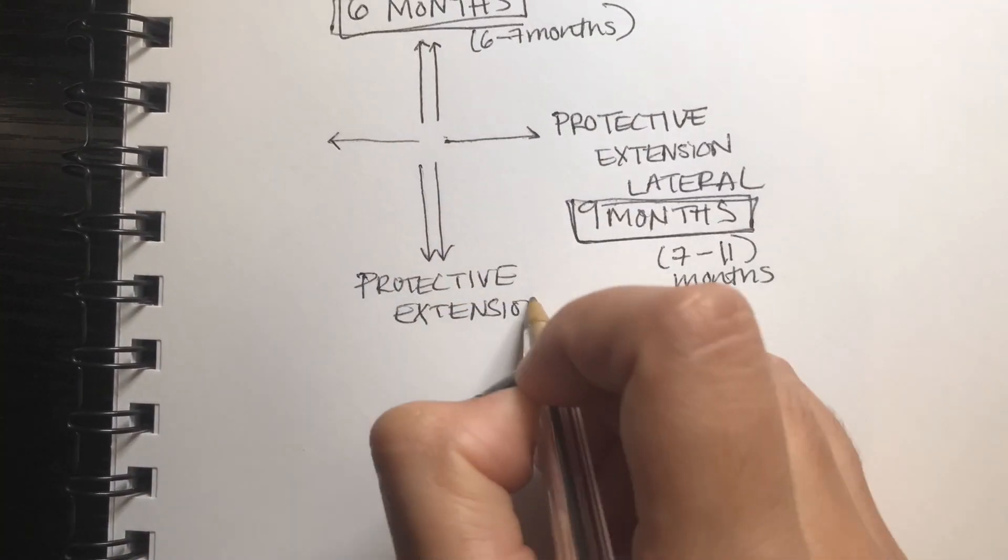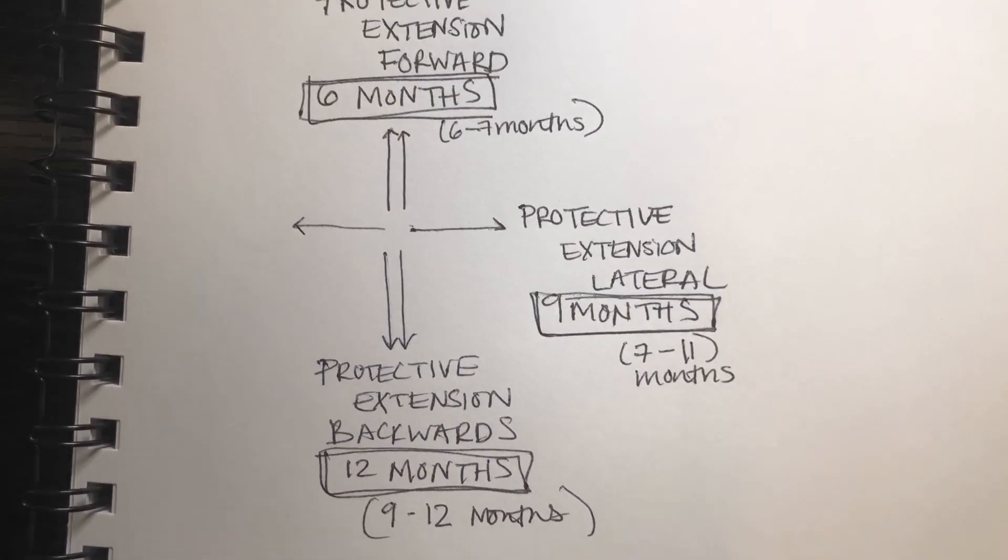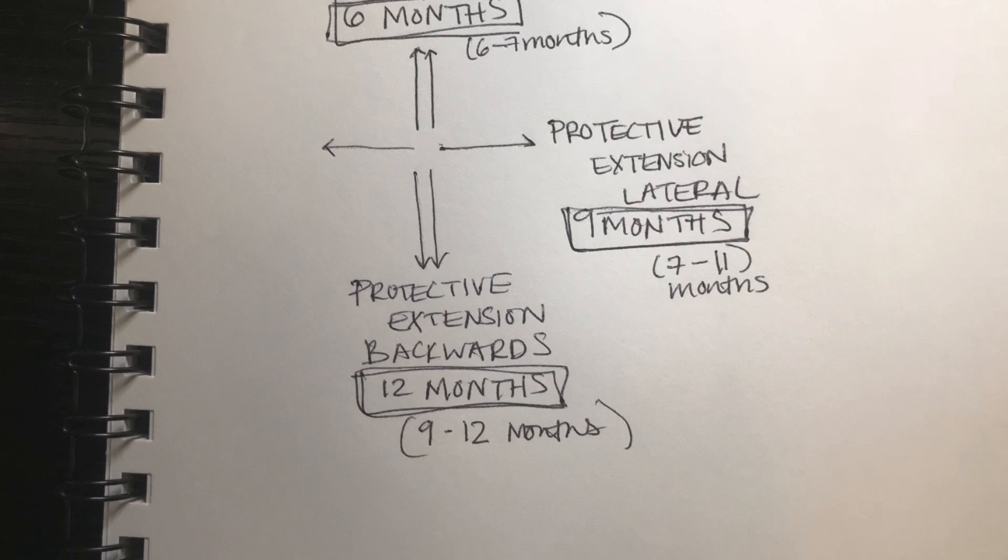So the last reflex we're going to talk about is your protective extension backwards reflex. You should see this typically around 12 months. The way that you test this, you basically have the baby and you firmly kind of tip them off balance backwards, and you should see a backwards arm extension.